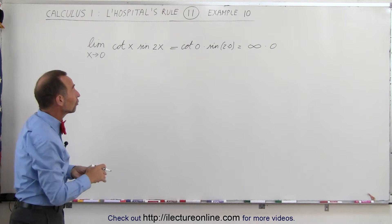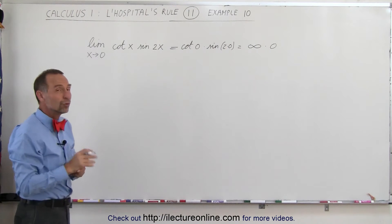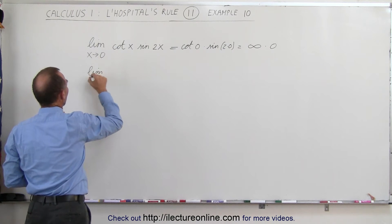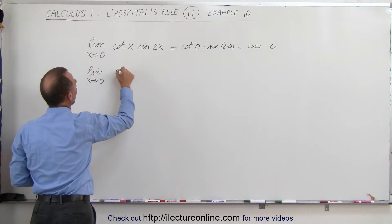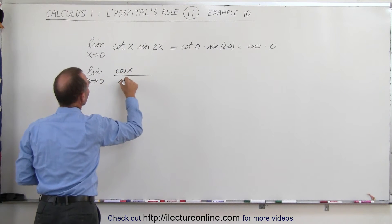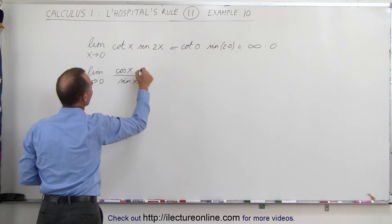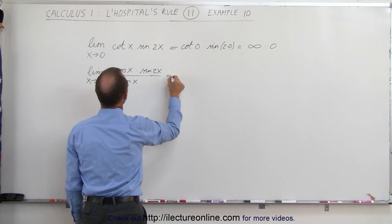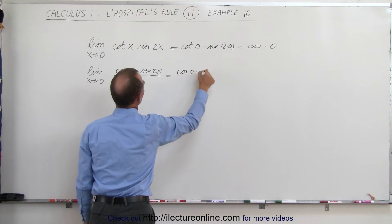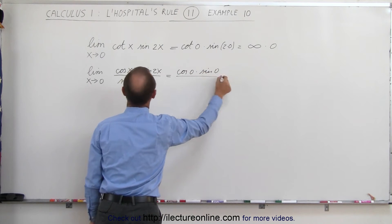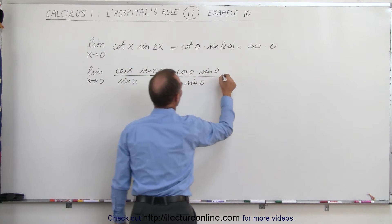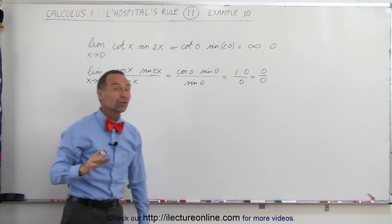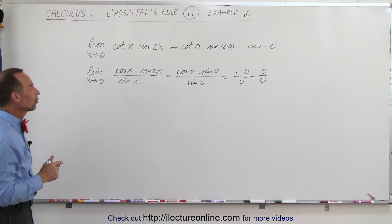It's not the right format if we want to use L'Hôpital's rule. What we're going to do is rewrite this problem. Instead of writing the cotangent, we'll write the limit as x approaches 0 of cosine of x divided by sine of x, times the sine of 2x. Now when we plug in the limit, this becomes the cosine of 0 times sine of 0 divided by sine of 0, which equals 1 times 0 divided by 0, or 0/0 — indeterminate form — and for this we can use L'Hôpital's rule.